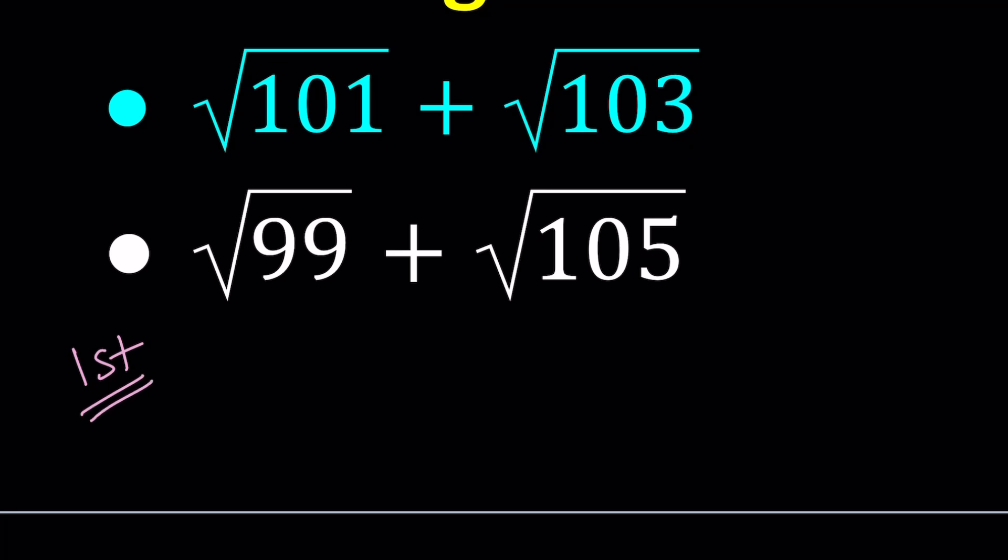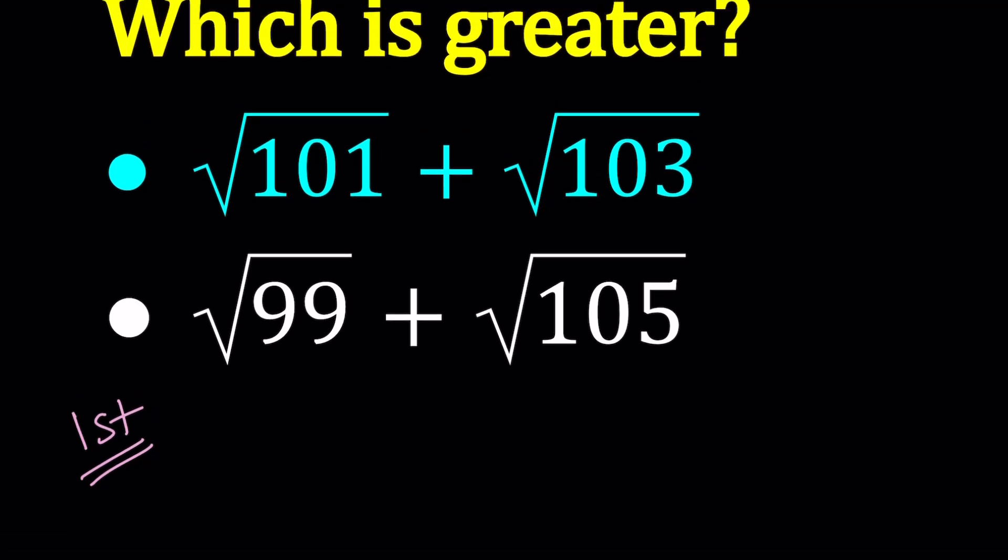For my first method, I want to consider a function which I can investigate for maximum, minimum values, increasing and decreasing intervals. In other words, how can we take these expressions and functionize them? We're going to turn these into functions. How can I express them as points on the graph of a function?